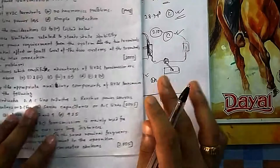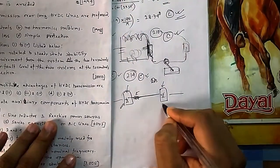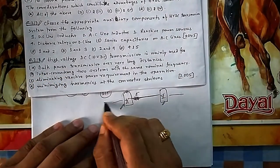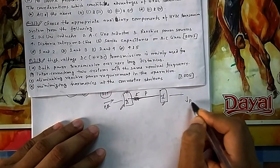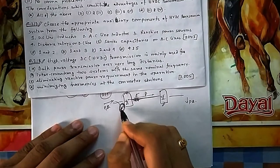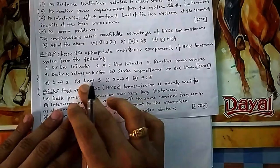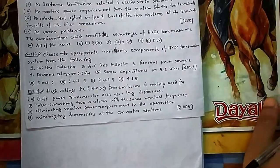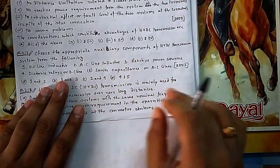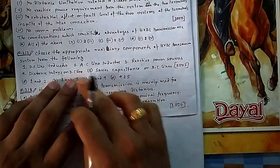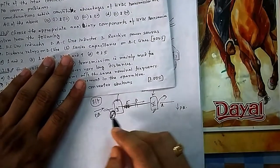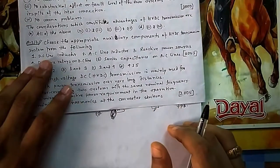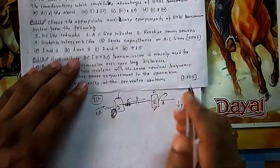An AC line inductor — there is no AC line inductor on the AC side. Reactive power sources — yes, these are provided on both sides. On one side reactive power is absorbed and on the other side it is delivered. Distance relays in the DC line — this is not applicable; that is the V/Z concept from protection systems and is not used in DC lines. Series capacitance — no; there may be shunt capacitors for reactive power. So the answer is DC line inductor and reactive power sources — option B for Q217.